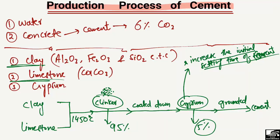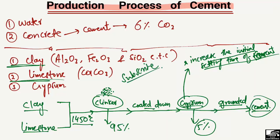So this was the general overview of how cement is produced: by combining clay and limestone, heating them to 1450°C to form clinker, cooling it down, adding 5% gypsum, and grinding the mixture to cement particle size. Hope you guys understand. Don't forget to subscribe to the channel for daily 7 Engineering videos. Thank you for watching.